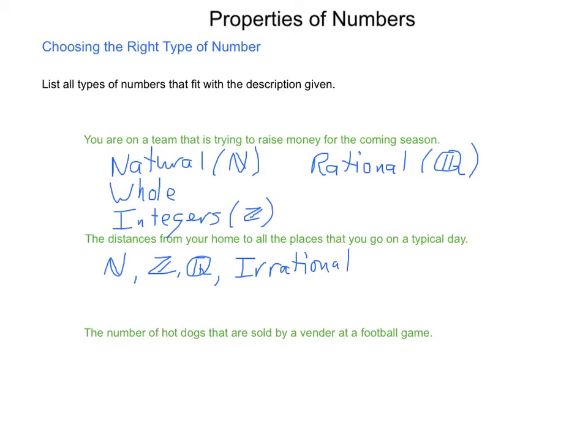The number of hot dogs that are sold by a vendor at a football game. Last one here. That's natural numbers. And we have the possibility of the whole numbers. And we would include the integers. Although integers, the only thing that they add on outside of the natural is the value of negative numbers. And we're not going to have those. But we are limited to these. We can't sell half of a hot dog. We can't sell two-thirds of something. It's either we sell it or we don't.